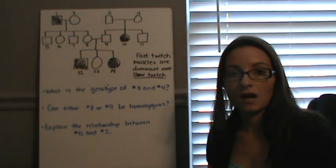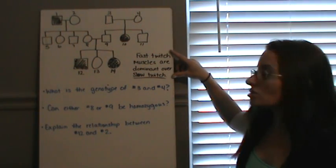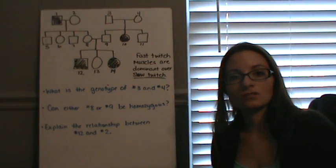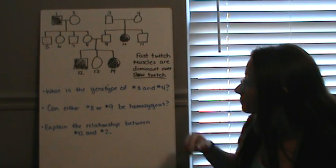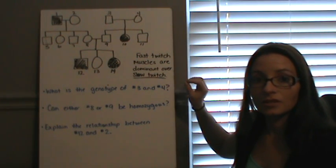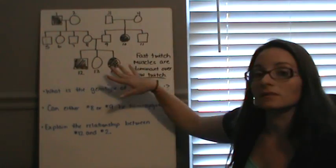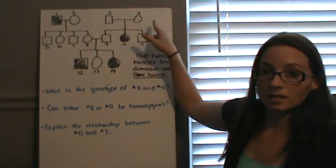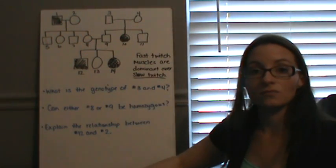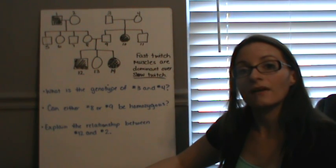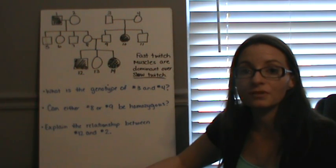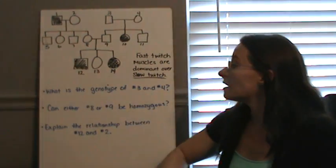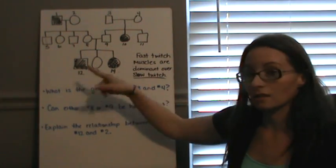So let's take a look at this chart here. This chart is going to show us that fast twitch muscles are dominant over slow twitch muscles. Fast twitch is dominant over slow twitch. If you have slow twitch muscles, that's recessive, so those are the ones that are colored in. The recessive trait is what's colored in. We're going to number each of our boxes or circles — each individual will have a specific number so we can refer to a specific individual. Individual number 6 would be this one right here; individual number 12 would be this one right here.